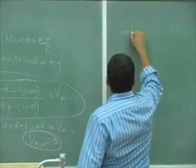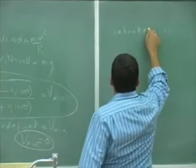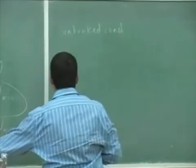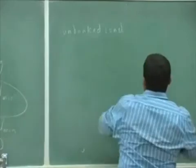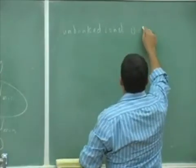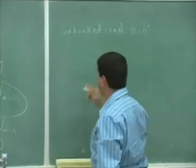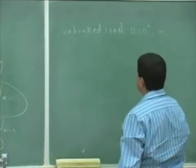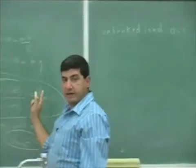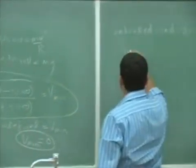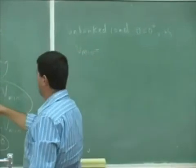The unbanked road had theta equal to 0, but it had a coefficient of static friction μ_s. So if I apply these general equations to that, look what we get. We get v_min equals, and then you put 0 here.